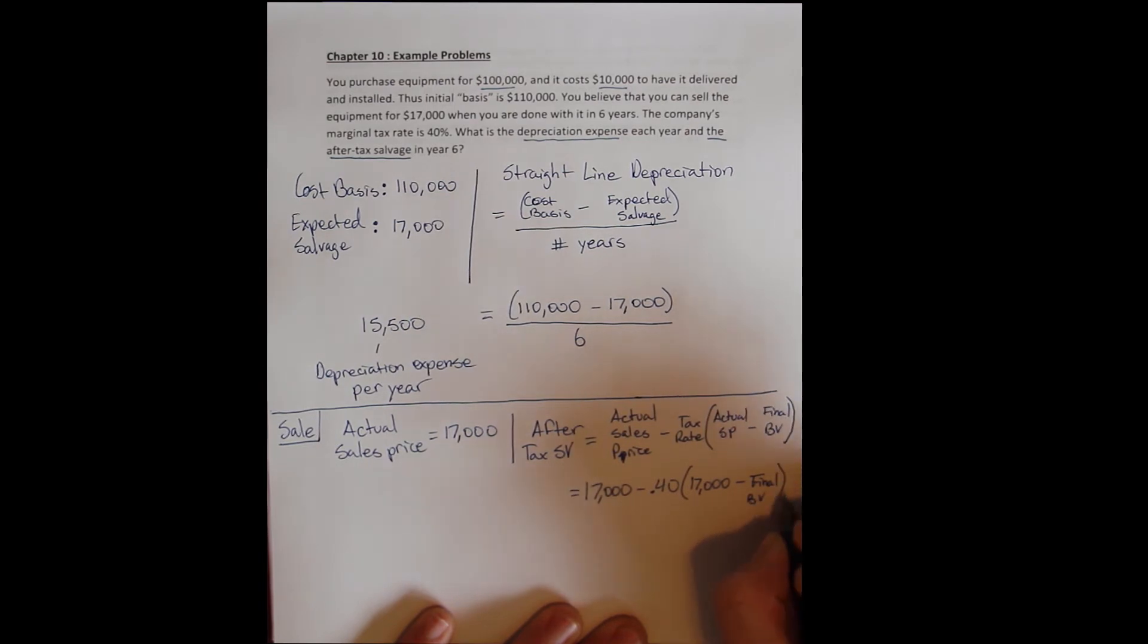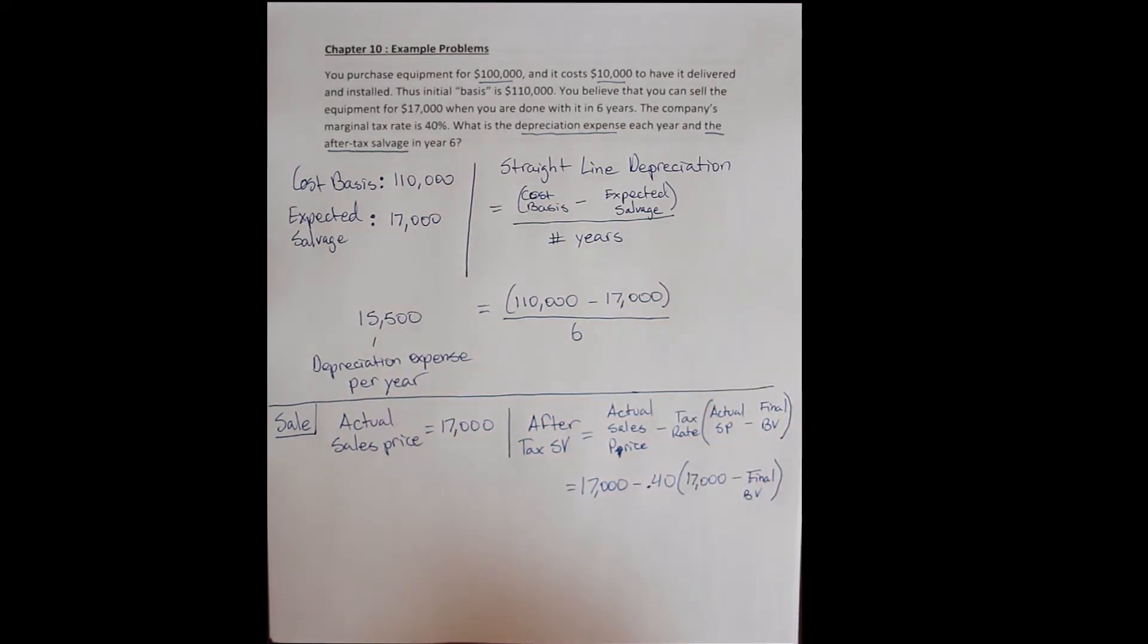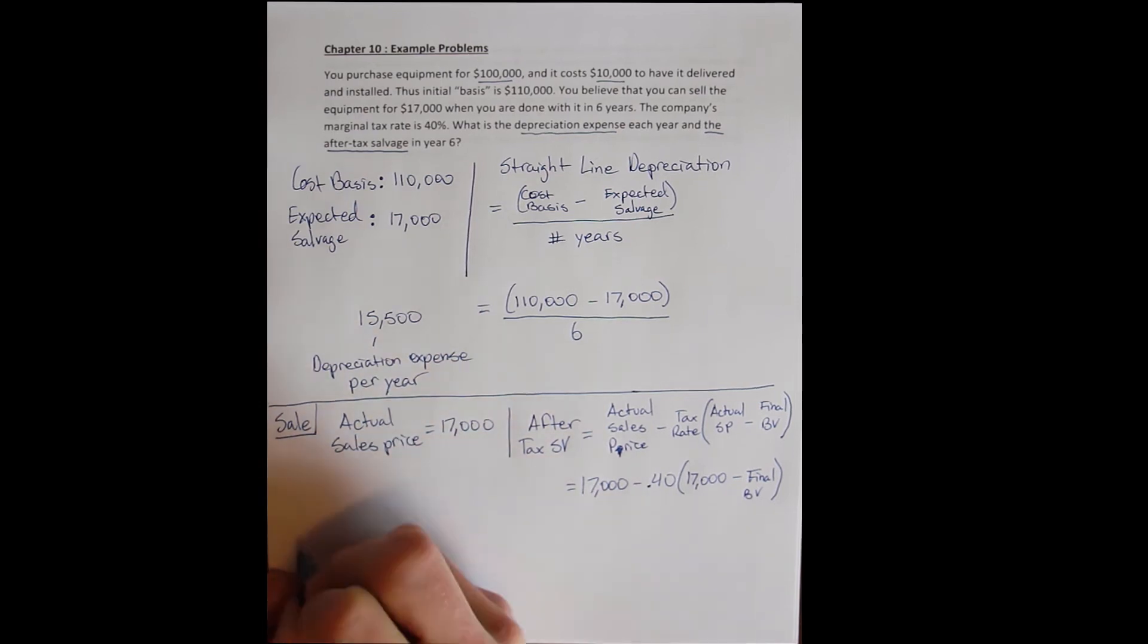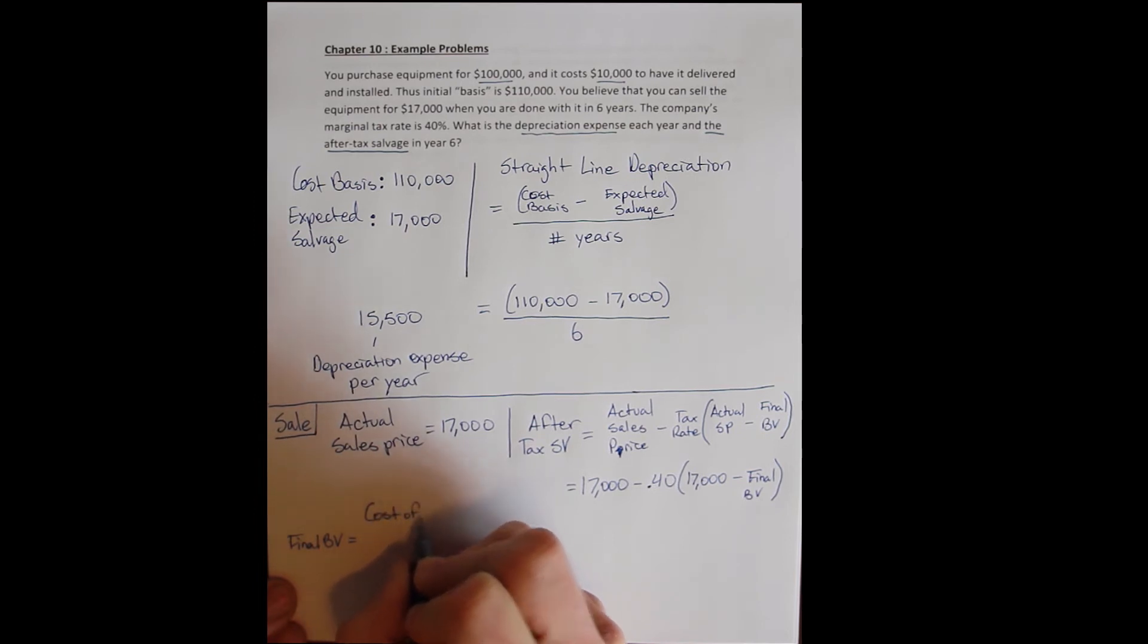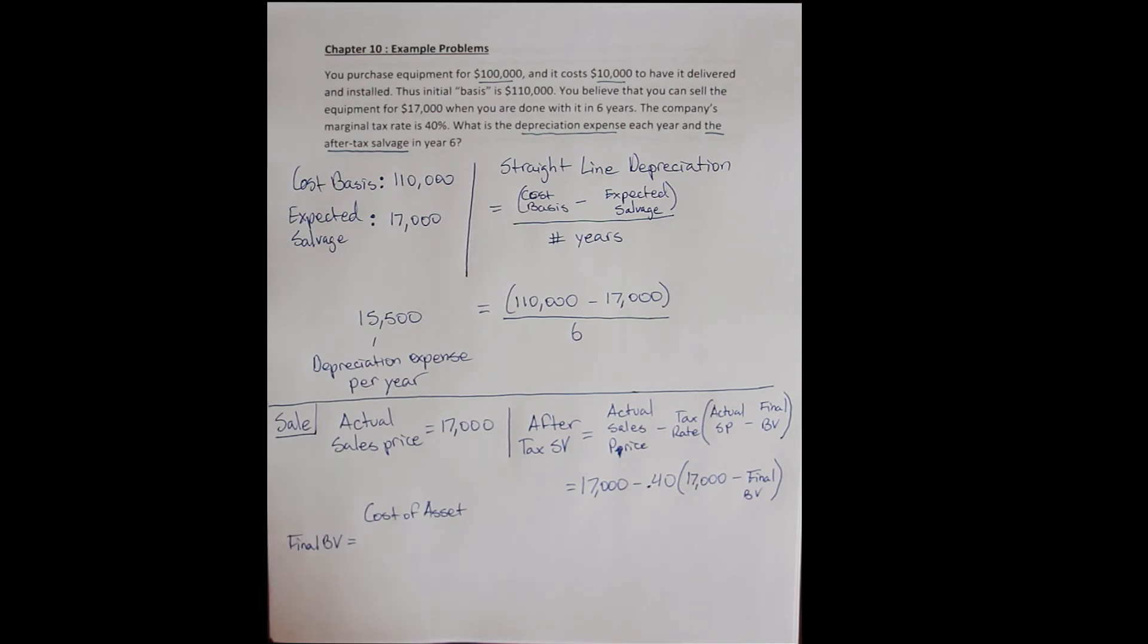This is what the asset is listed as being worth on our books. Now, to calculate the final book value, we have to see how we have depreciated the value of the asset on our books. So right when we bought the asset, the first year, the value on our books was the cost of the asset, the cost basis. We paid $110,000 for the asset. That's how we list it in terms of value on our books. But over the years, we subtract the depreciation expense every year.